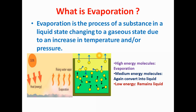First of all we will see what is Evaporation. Evaporation is the process of a substance in liquid state changing to a gaseous state due to increasing temperature or pressure. Suppose this is a liquid. When this liquid receives heat energy from the atmosphere, it gets converted into vapor form. This phenomenon is known as Evaporation — changing liquid state into vapor state due to atmospheric heat and pressure.